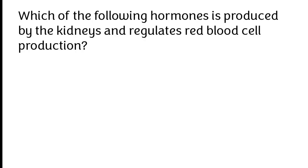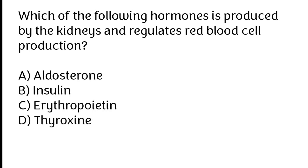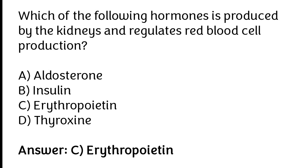Which of the following hormones is produced by the kidneys and regulates red blood cell production? Aldosterone, insulin, erythropoietin, thyroxine. The correct answer is option C — erythropoietin is produced by the kidneys and regulates red blood cell production.